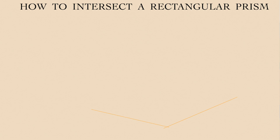Let's make one more drawing of a vertical prism intersected by a vertical plane that stands on the same ground at some oblique angle. I hope by this time you already know how to draw such intersections.